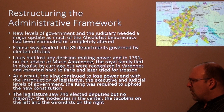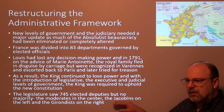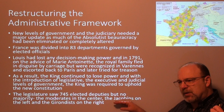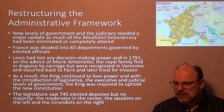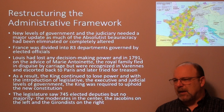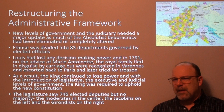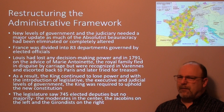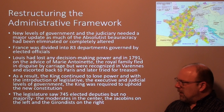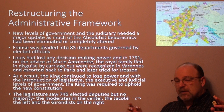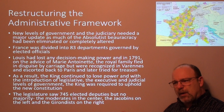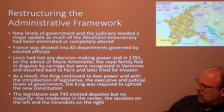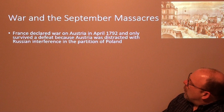As a result, the king continued to lose power. With the introduction of legislative, executive, and judicial levels of government, the king was required to uphold the new constitution. The legislature saw 745 elected deputies but no majority — the moderates in the center, the Jacobins on the left, and the Girondists on the right. Importantly, the terms 'left wing' and 'right wing' come directly out of the French Revolution — from where members sat in the French legislature.